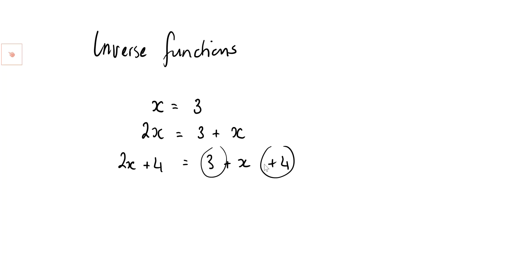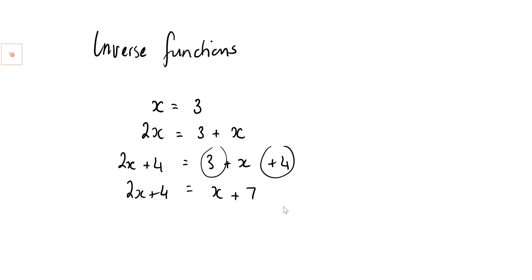This can be simplified by collecting like terms. These are both specific — they are constants. X is a variable because it changes, but these don't change: they are always constant, always going to be 3 and 4. X will depend on what I put in — that will change — but these are like terms, they're both constants, so I can collect them and say x plus 7.